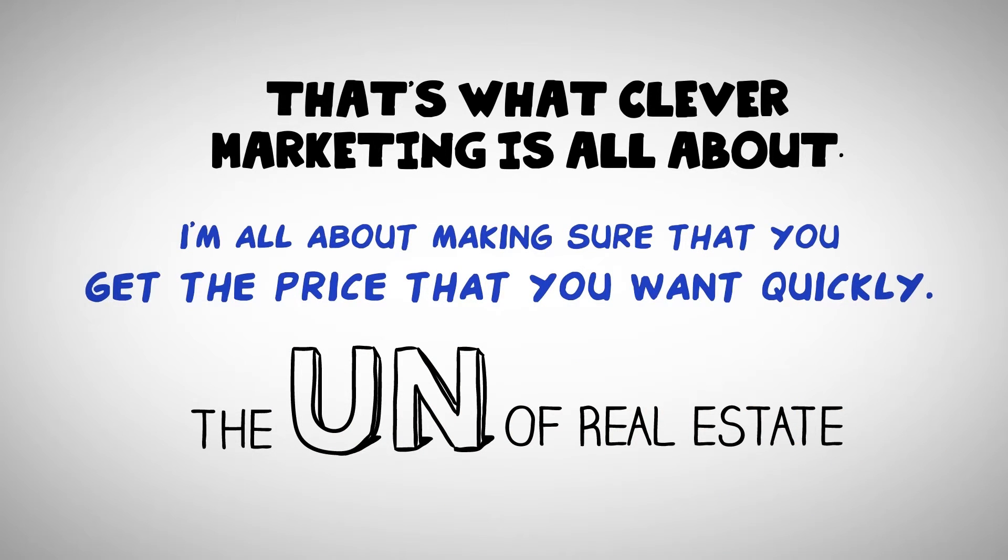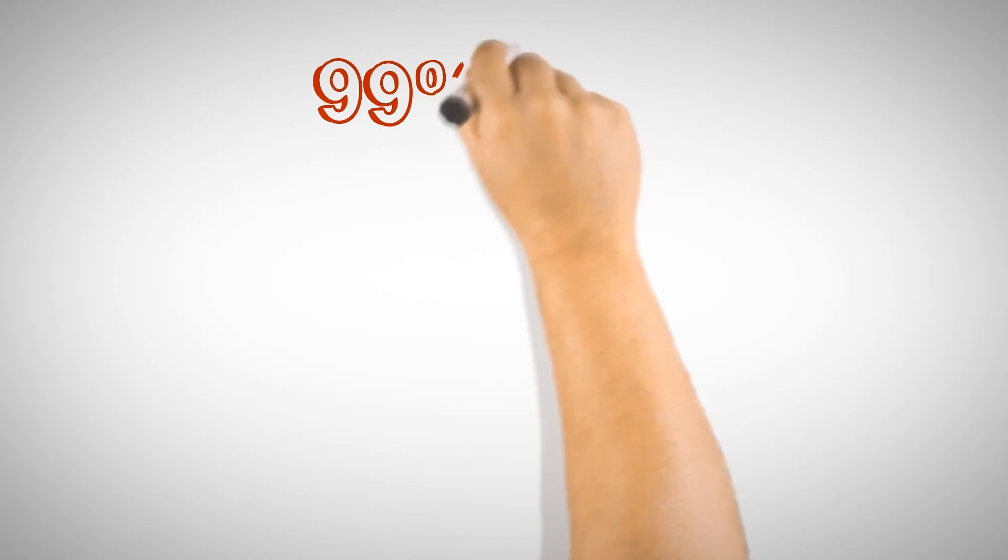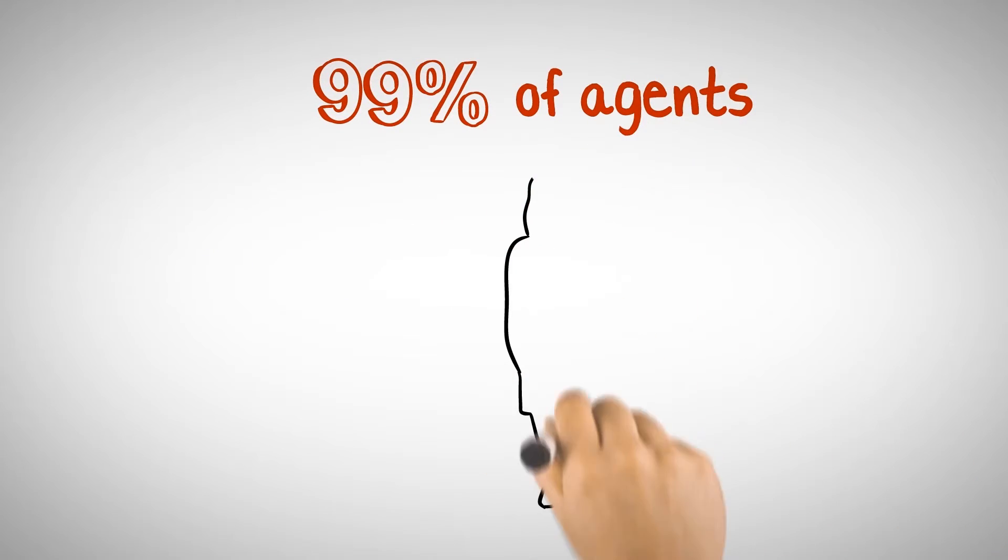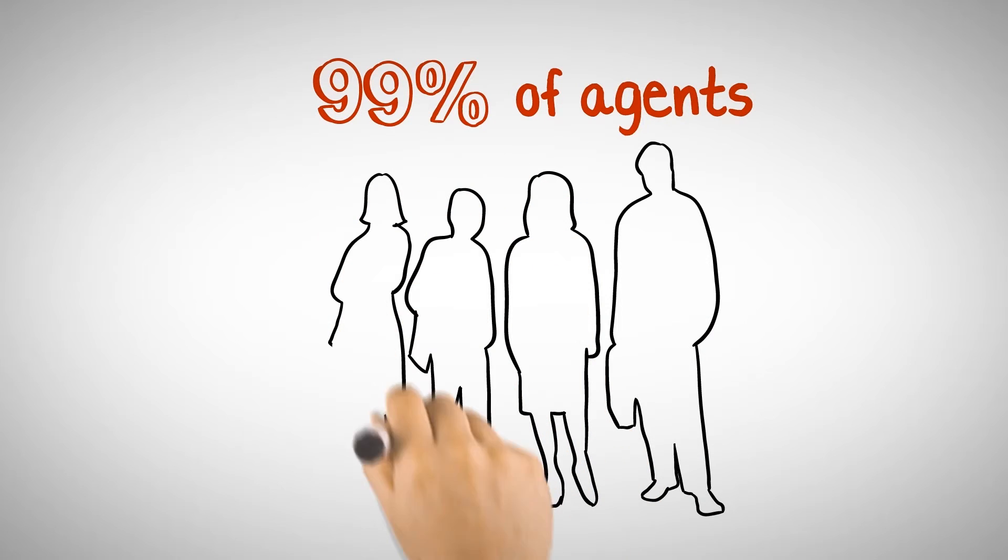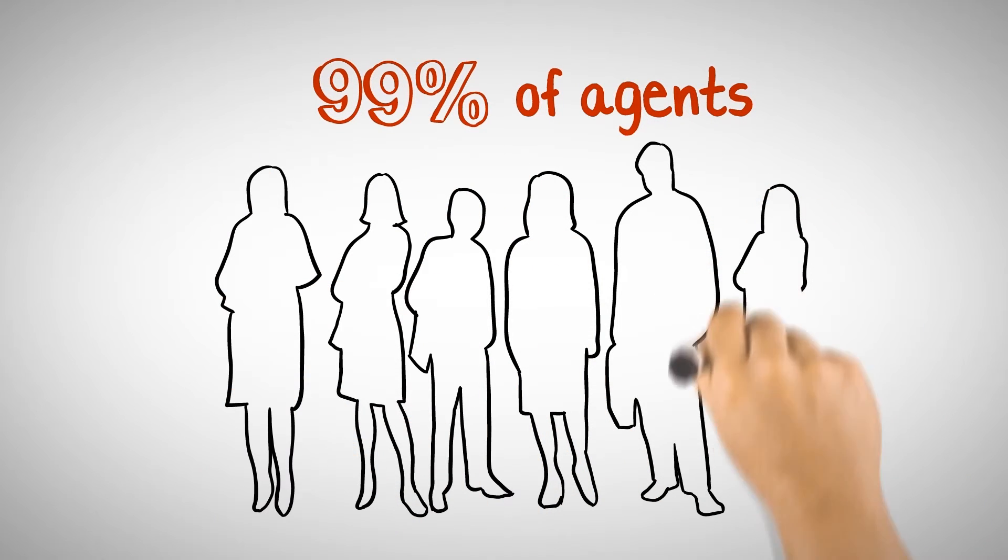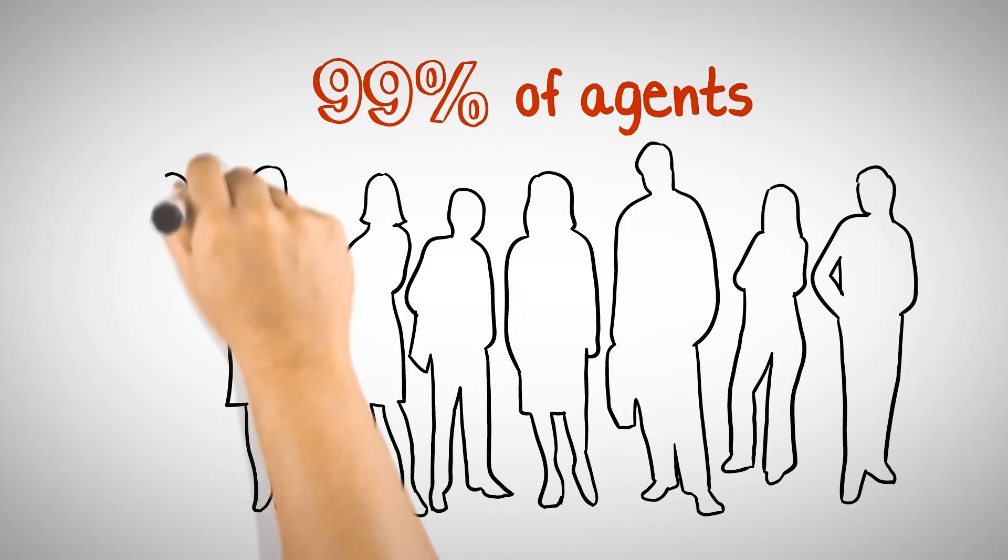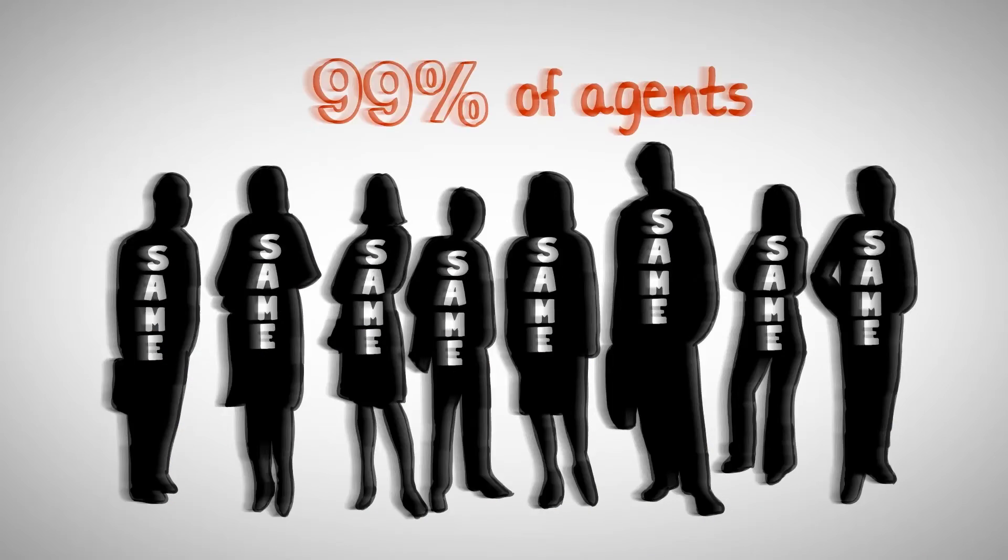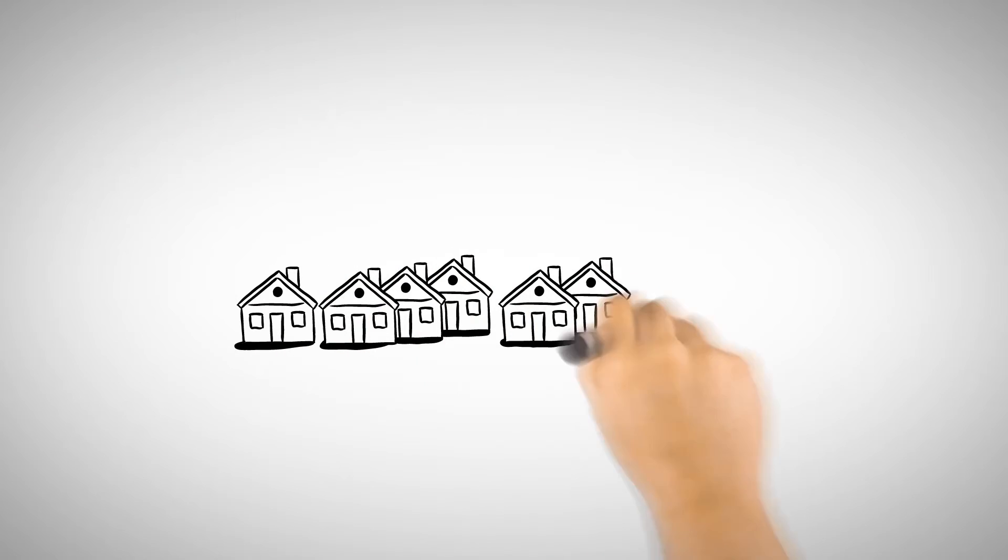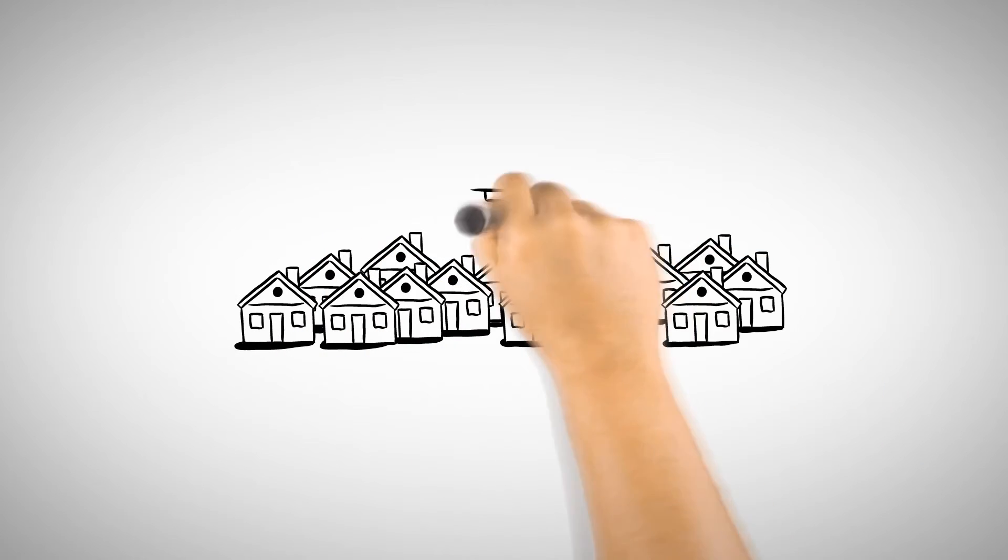So you've got an easy choice to make. You can give your home to any of the 99% of agents who all look the same, do the same advertising, sit at the same sort of desks, drive the same sort of car, drink the same coffee, and tell potential buyers the same boring story over and over again.